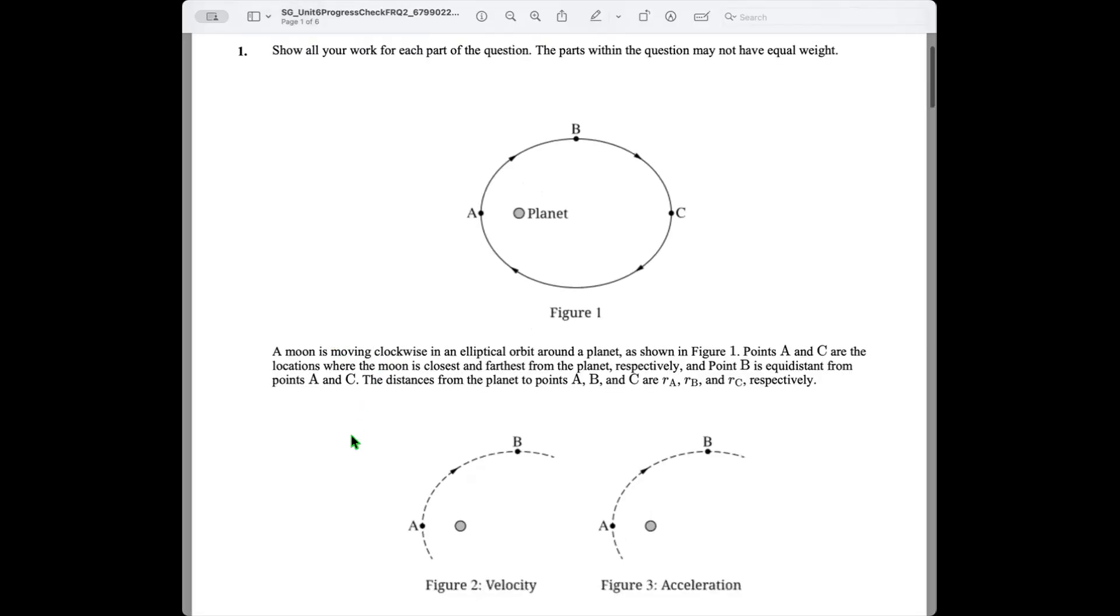So a moon is moving clockwise in an elliptical orbit around a planet, as shown in Figure 1. Points A and C are the locations where the moon is closest and farthest from the planet, respectively, and point B is equidistant from points A and C. The distances from the planet to points A, B, and C are RA, RB, and RC, respectively.